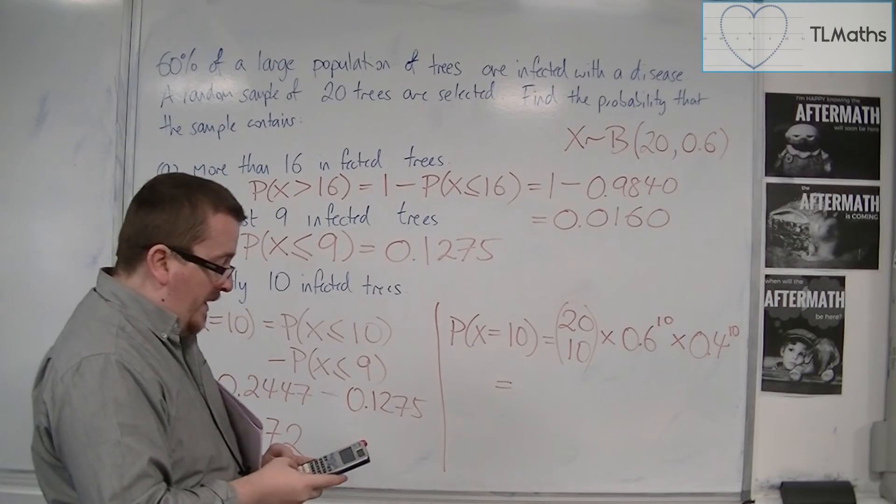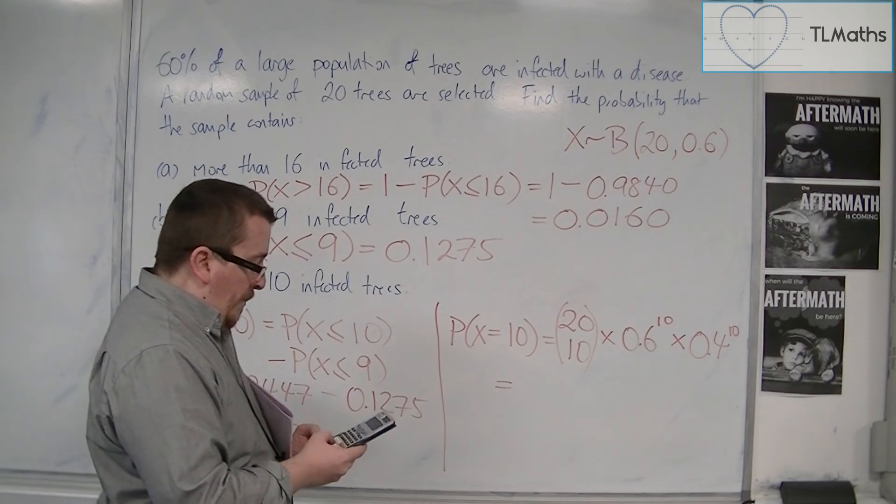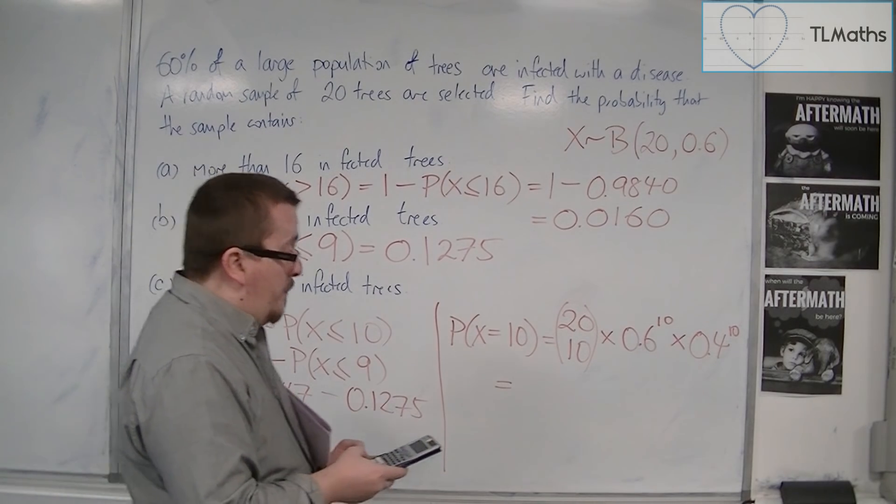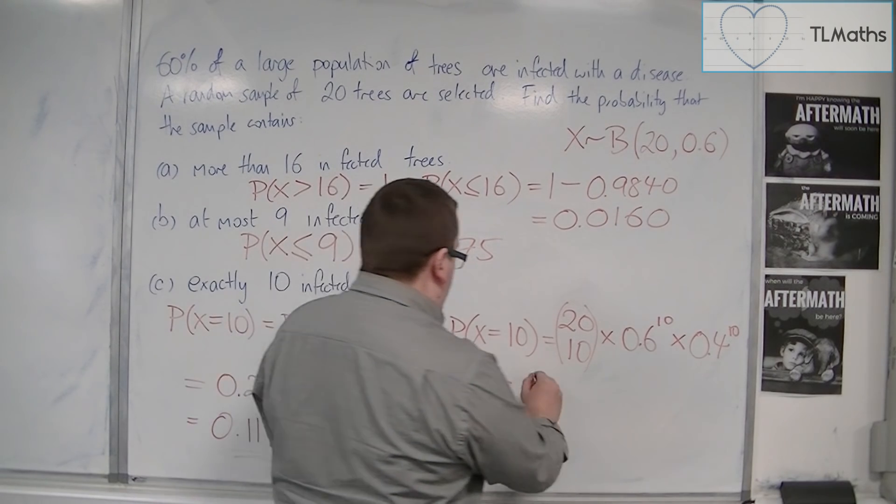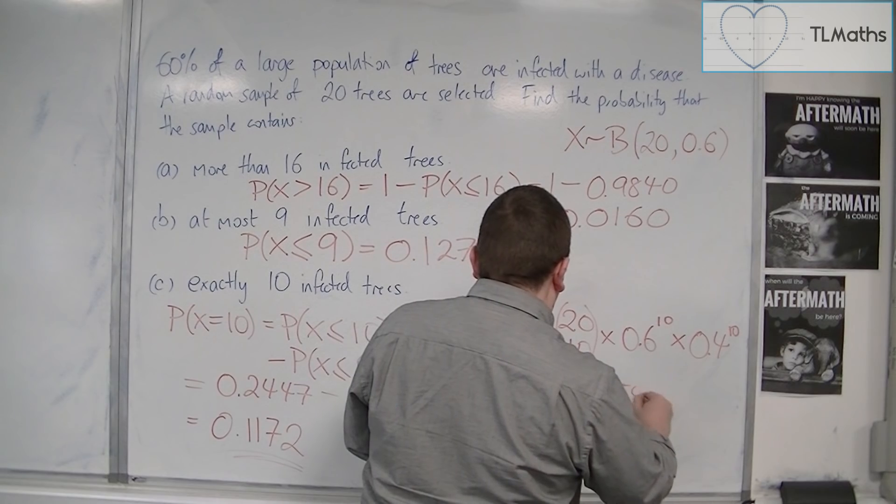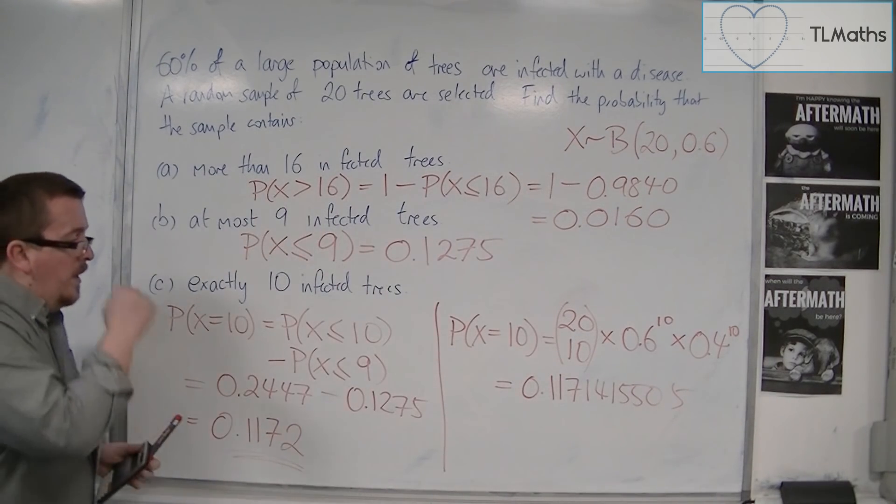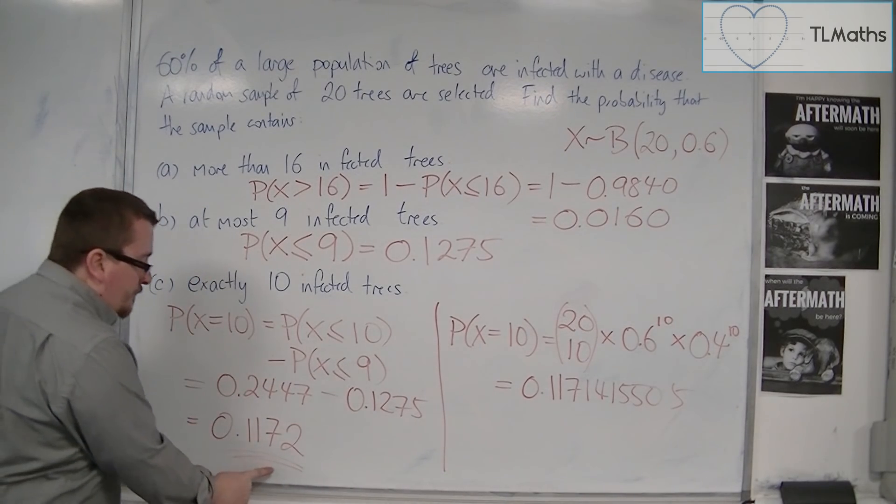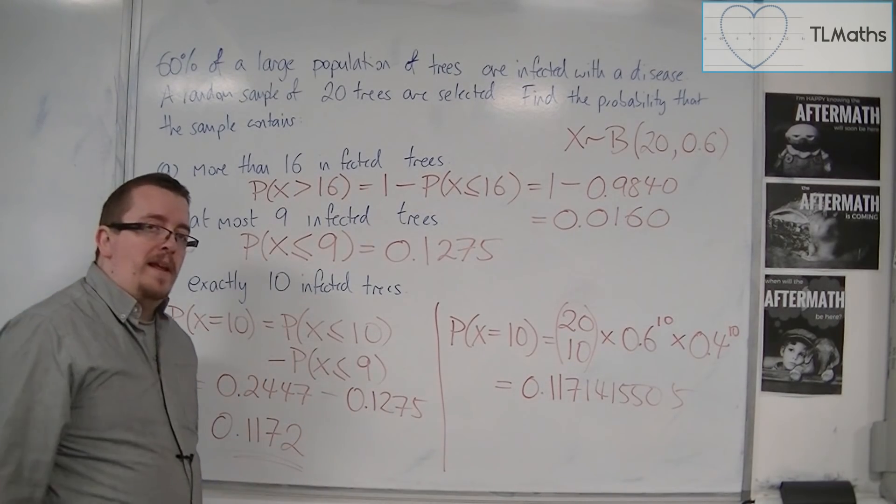So if we do this on the calculator, 20 NCR 10, and then multiply that by 0.6 to the power of 10, and then multiply that by 0.4 to the power of 10. And we get 0.1171415505. Now, as you can see, these aren't exactly the same. They're the same to three decimal places.